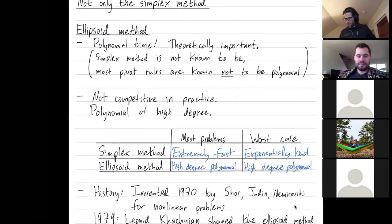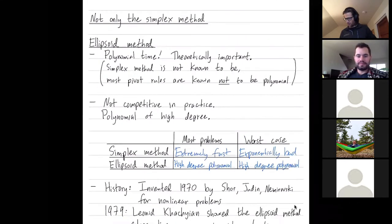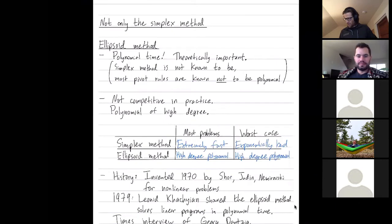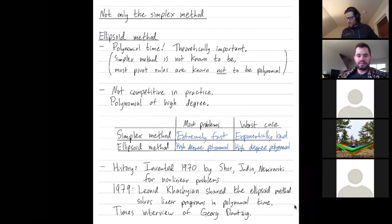Let me talk about the history of the ellipsoid method for a little bit. It was invented in 1970 by Shor, Judin, Nemirovsky to solve non-linear problems. So it was designed for non-linear problems.